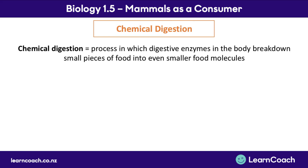Digestion is the process where mammals take the food they eat and break it down into a much smaller form so we can absorb it into the blood and use it to make energy. Physical digestion is one form, and the second is chemical digestion. The key definition is: chemical digestion is the process in which digestive enzymes in the body break small pieces of food into even smaller pieces, down to their smallest possible unit — called molecules.